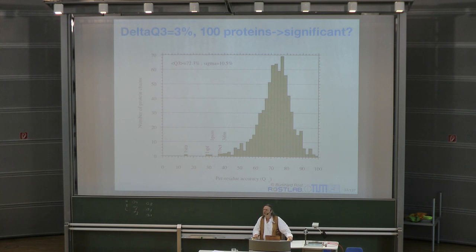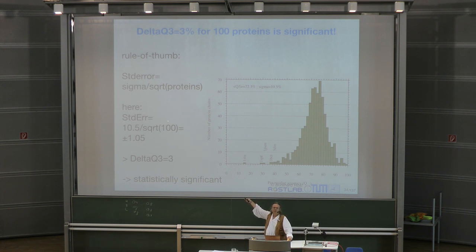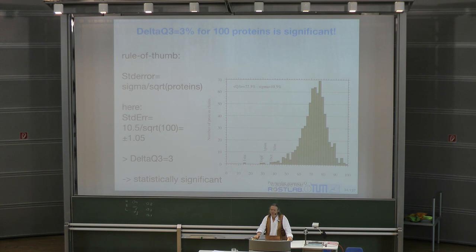Any idea how to get from the distribution to the standard error? Rule of thumb: the standard error is the standard deviation divided by the square root of the number of points — in this case, 10 divided by root 10 is about 1. So plus or minus 1 percentage point would be 1 standard error.